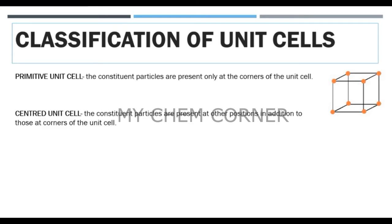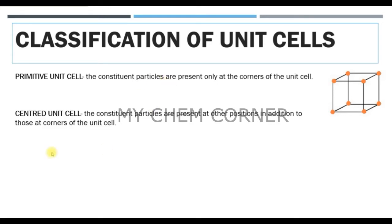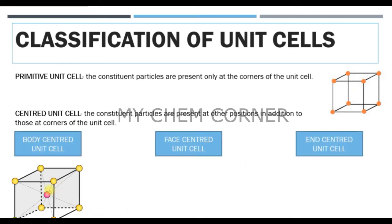The next type is a centered unit cell. Imagine you're sitting in a room — the room itself is considered a cube, and at each corner of the room there are spheres, making it a simple cube or primitive unit cell. But for a centered unit cell, if you have another sphere right in the center of the room hanging there, that is called a body-centered unit cell. So if I have a simple cube with a sphere at the center of the cube, that's called body-centered because it's at the center of the unit cell.